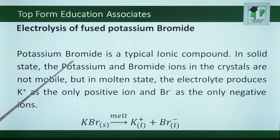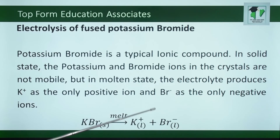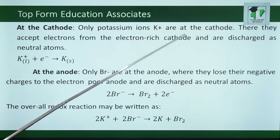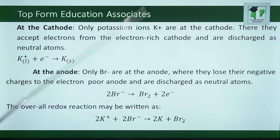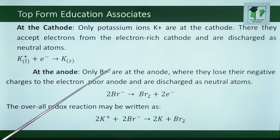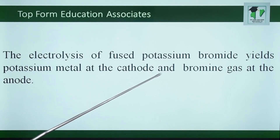Electrolysis of fused potassium bromide. Potassium bromide is a typical ionic compound. In the solid state, the potassium and bromide ions in the crystals are not mobile. But in the molten state, the electrolyte produces potassium ions as the only positive ion and bromide ion as the only negative ion. At the cathode, only potassium ions are present; they accept electrons from the electron-rich cathode and are discharged as neutral atoms. At the anode, only bromide ions are present, where they lose their negative charges to the electron-poor anode and are discharged as neutral atoms. The overall reduced reaction: 2K⁺ + 2Br⁻ → 2K(s) + Br₂(l). The electrolysis of fused potassium bromide yields potassium metal at the cathode and bromine at the anode.